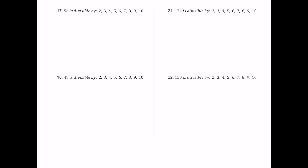For number 17, we have 56. It's even, so 2 works. Half is 28 — still even — so 4 works. Half of 28 is 14 — still even — so 8 works. The sum 5 plus 6 is 11, not a multiple of 3 or 9. The last digit is 6, not 5 or 0, so 5 and 10 fail. Since 3 failed, 6 also fails. For 7: 8 times 7 is exactly 56, no remainder, so 7 works.